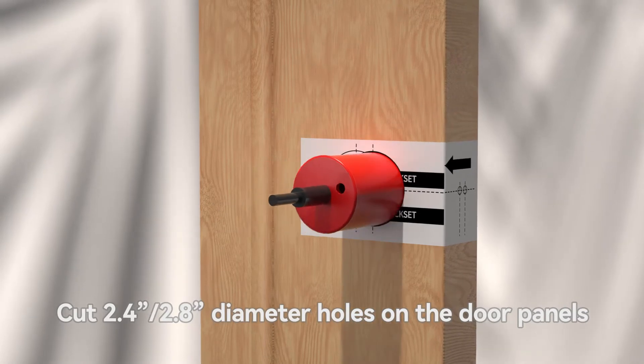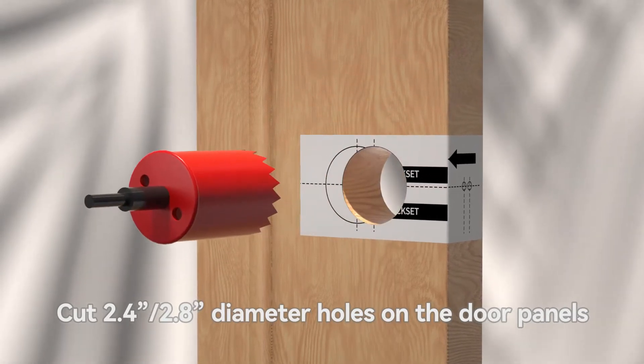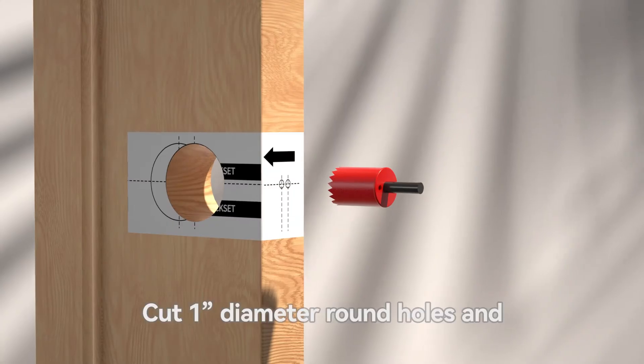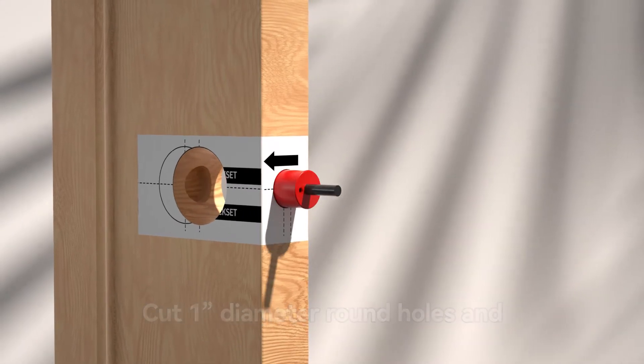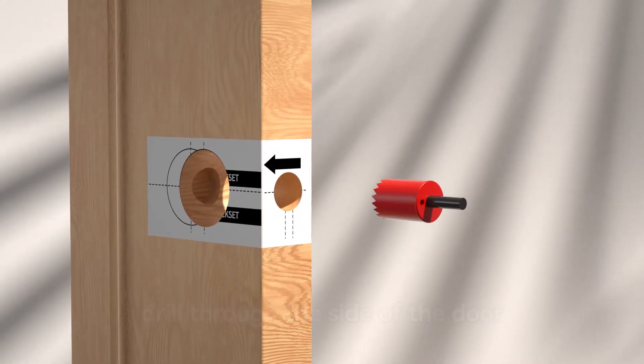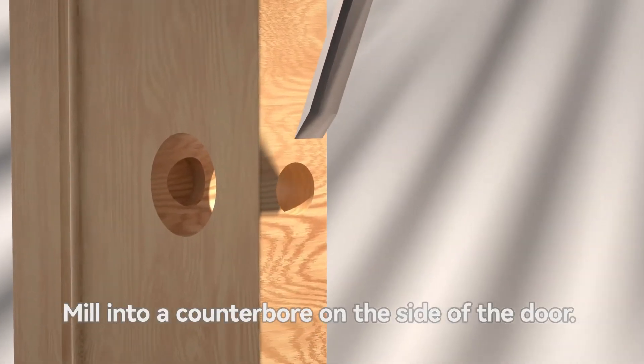Cut 2.4 to 2.8 diameter holes on the door panels. Cut 1 diameter round holes and drill through the side of the door. Mill into a counterbore on the side of the door.